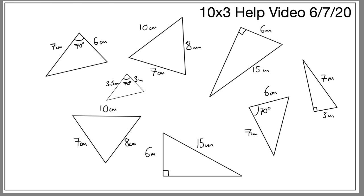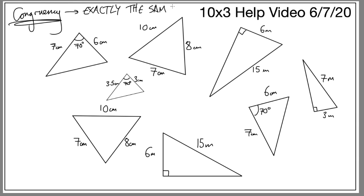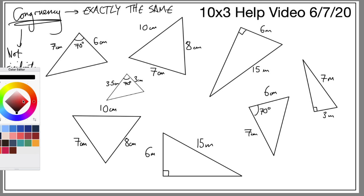The last thing to look at is congruency. Congruency is a word you only see in maths and it means exactly the same — identical in every way. It's not the same as similarity; similarity means similar but not quite the same. Here are some triangles and with congruency we are concerned about triangles. Some of these triangles on the page match each other — let's try to find which ones.